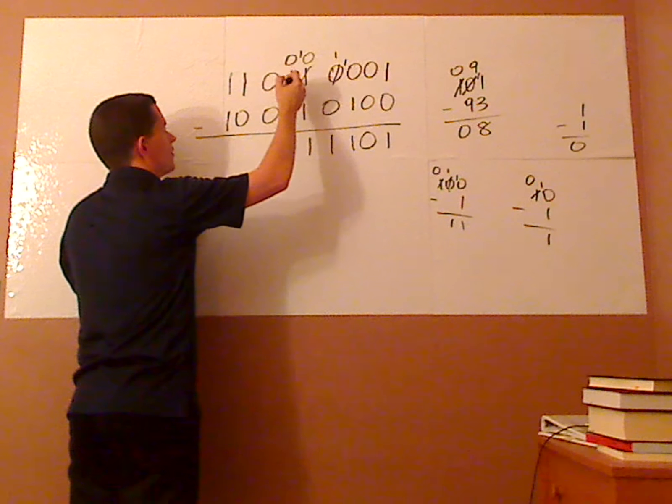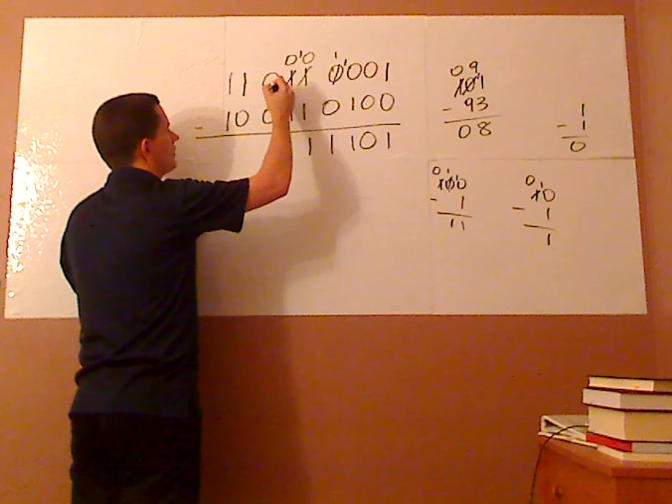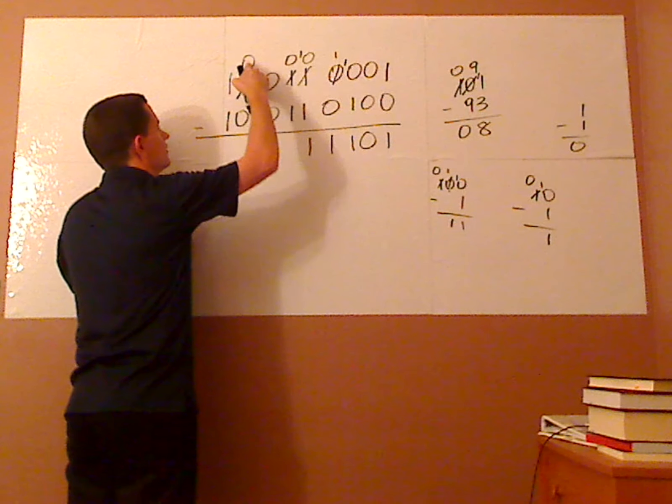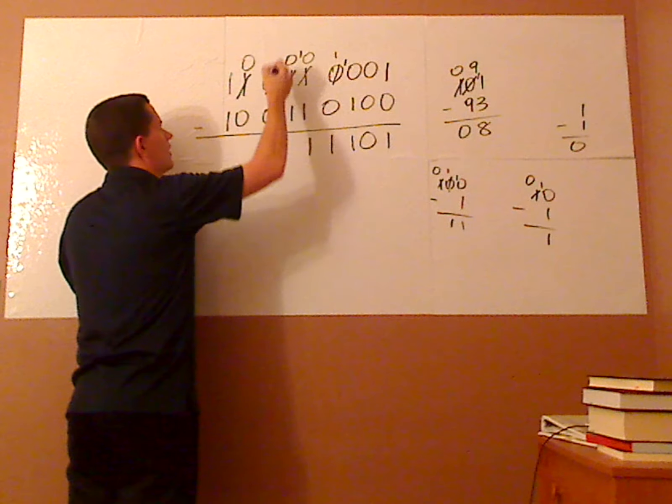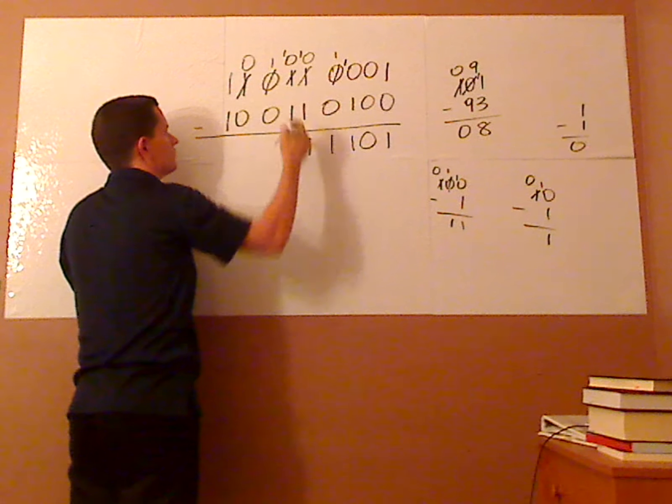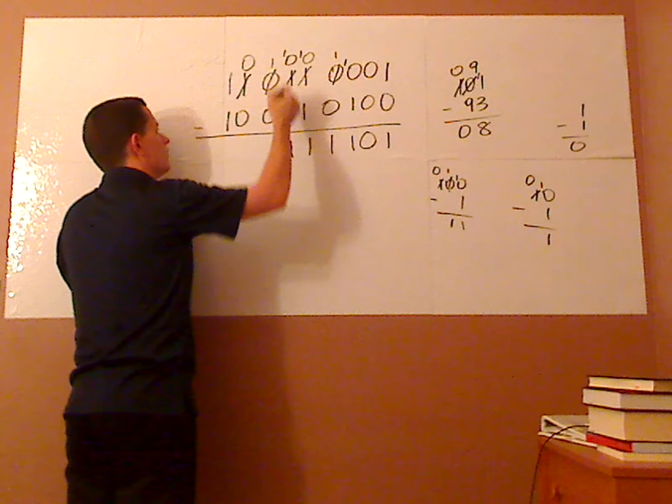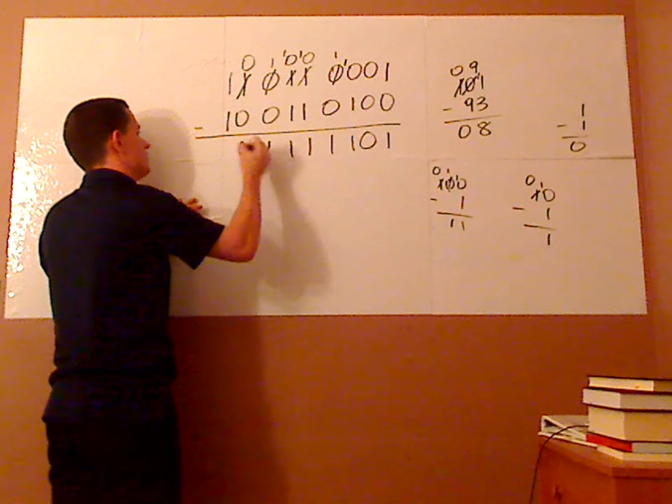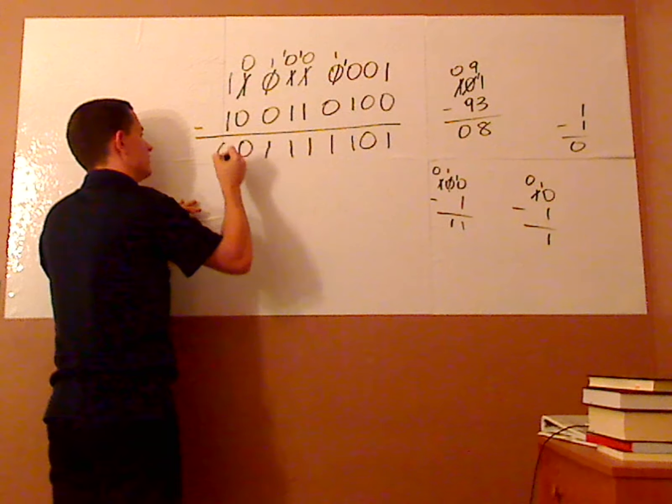This is a 0 right here, so I have to borrow. So I can't borrow here, have to use this one. That changes to a 0, drop the 1, that becomes a 10. 10 minus 1 is 1, 1 minus 0 is 1, and then 0 minus 0 is 0, and then 1 minus 1 is 0.